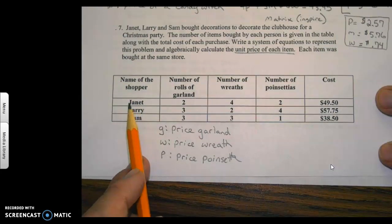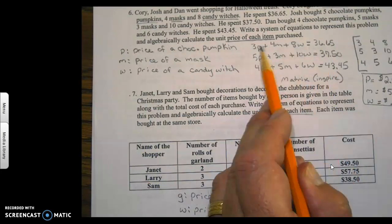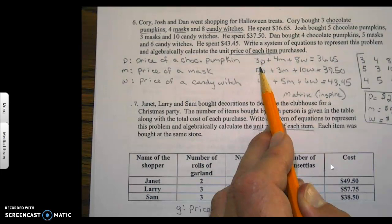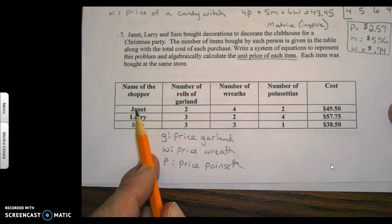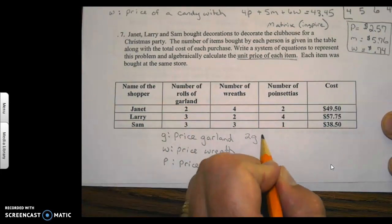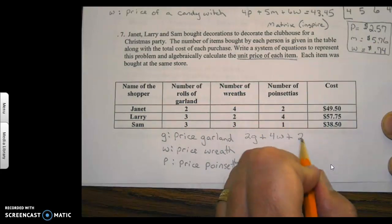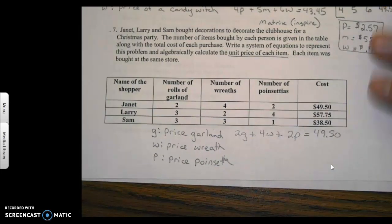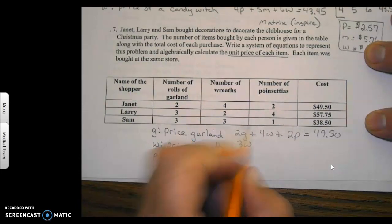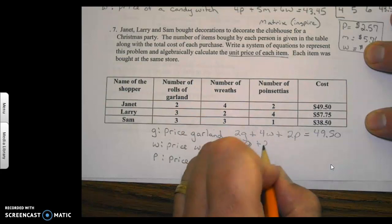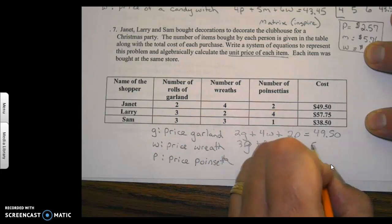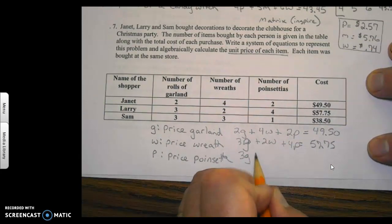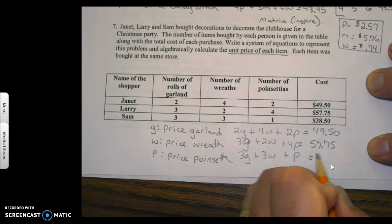To get your numbers from here, you're going to start off with Janet. Janet is our first shopper. When you write this, the first equation is going to be for Janet. We have 2 garland plus 4 wreaths plus 2 poinsettias, and our total is $49.50. Larry did 3 garland, 2 wreaths, and 4 poinsettias and paid $57.75. Sam got 3 garland, 3 wreaths, and 1 poinsettia and paid $38.50.